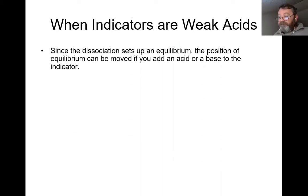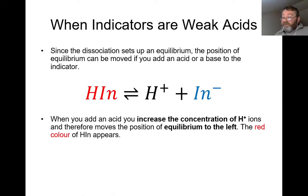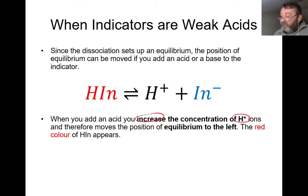Since the dissociation sets up an equilibrium, the position of equilibrium can be moved if you add an acid or a base to that indicator. When you add an acid you increase the concentration of H+; when concentration increases, equilibrium moves away from it — so increasing H+ gives a shift of the equilibrium to the left and the red color predominates. To get the equilibrium to move to the right-hand side, you decrease H+.